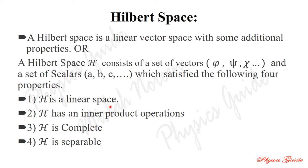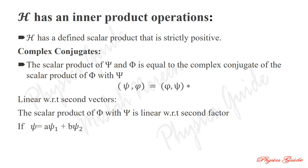The first property — Hilbert space H is a linear vector space — means H has two sets of elements: the set of vectors and the set of scalars, which hold the properties of addition rules and multiplication rules we discussed earlier. The second property is that H has an inner product operation.